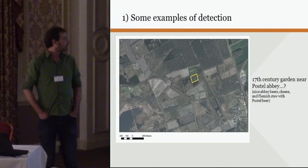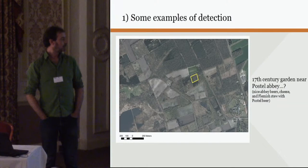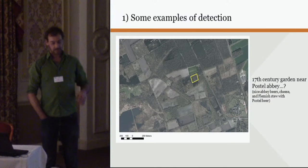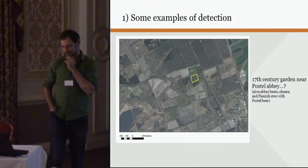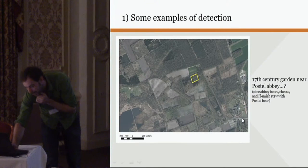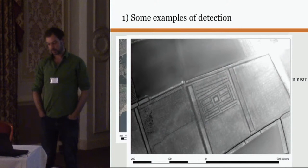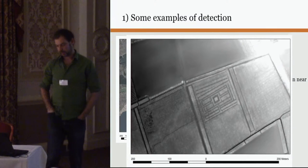One of the most enigmatic examples is from the forest near Postel Abbey — which also has nice abbey beers, cheese, and Flemish stew, so very nice to visit as well. In this yellow square under the forest appears an enigmatic structure, away from all the rest of the Postel Abbey: a very planned, laid-out, seemingly 17th century garden or park structure, but located outside everything else.